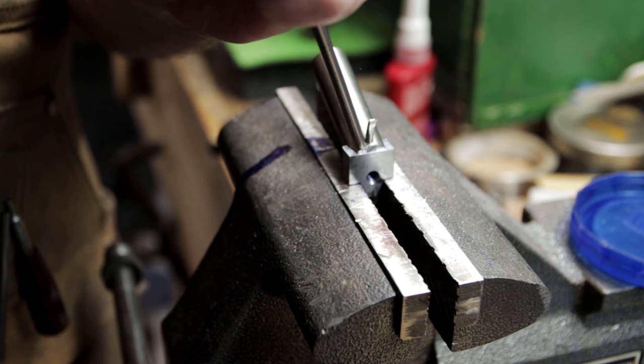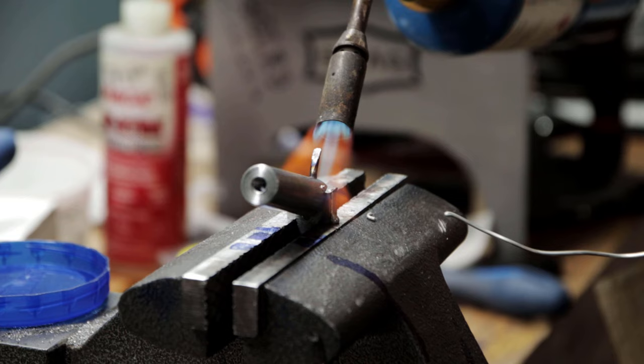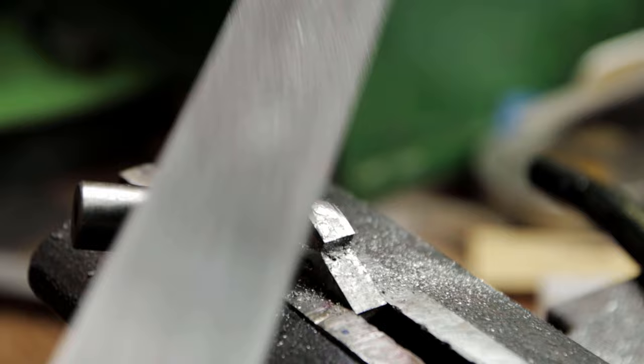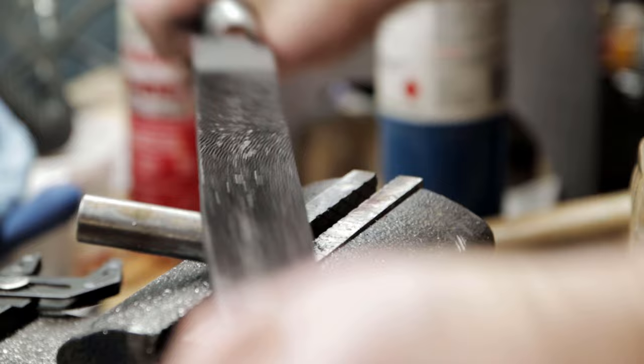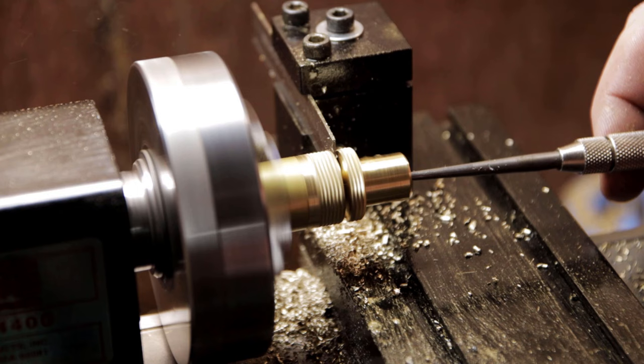So this here is going to be the handle. Knock everything flush and now it is getting silver soldered together and then a lot of file work just to try to make it look pretty. Now this is going to be the retaining nut for the handle to help hold on the wooden piece that's going to go on there as well.